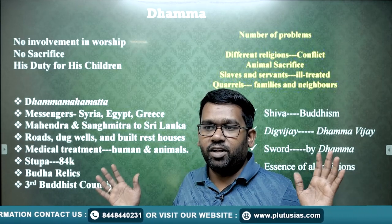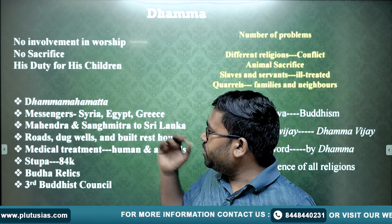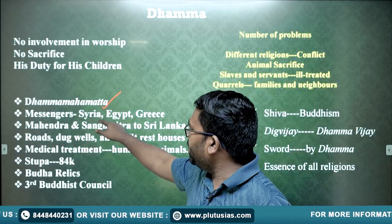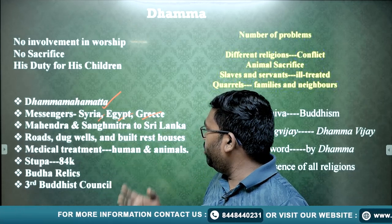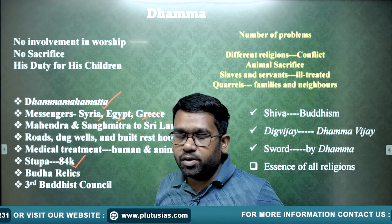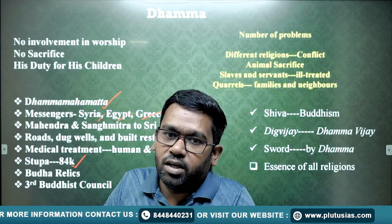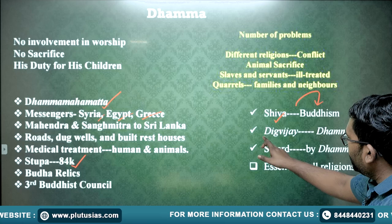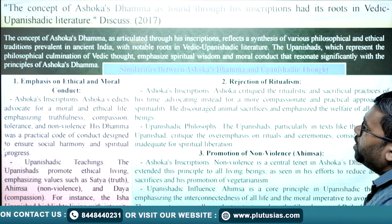Ashoka considered himself as the father of his subjects, wanting to take care of them like his own sons and daughters. For this purpose he appointed the official Dhamma Mahamatyas, who would go everywhere and spread the message of Dhamma. He sent messengers to Syria, Egypt, and Greece; sent his son Mahendra and daughter Sanghamitra to Sri Lanka; constructed roads, dug wells, and built rest houses; made hospitals for animals and humans; built 84,000 stupas and distributed the relics of Buddha across India; and organized the Third Buddhist Council at Pataliputra.